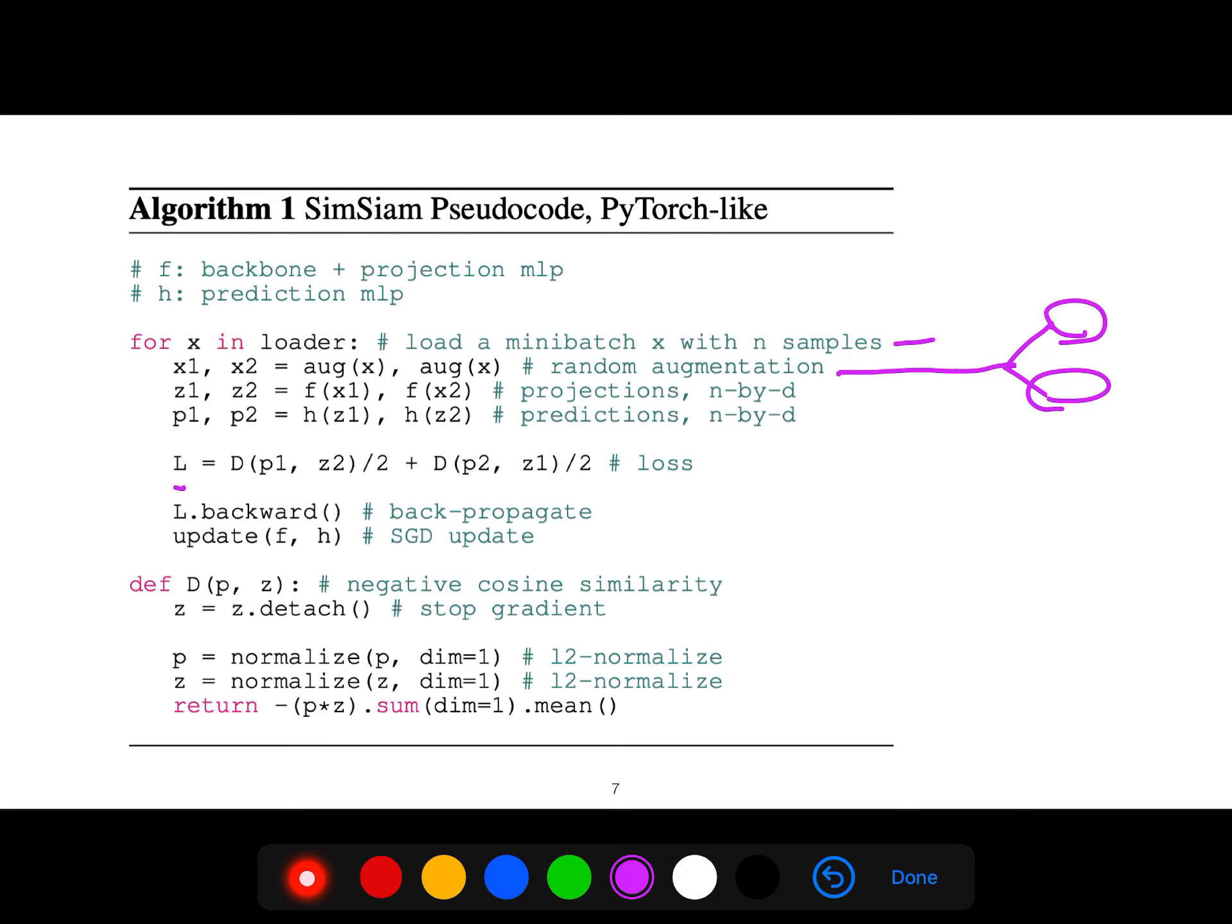This is the loss. It tries to make it more symmetric, although the architecture is deliberately non-symmetric. Because if it is non-symmetric, then you can prove theoretically that your model does not collapse. Although SimSiam still collapses if the model is too simple, there is empirical evidence for that.